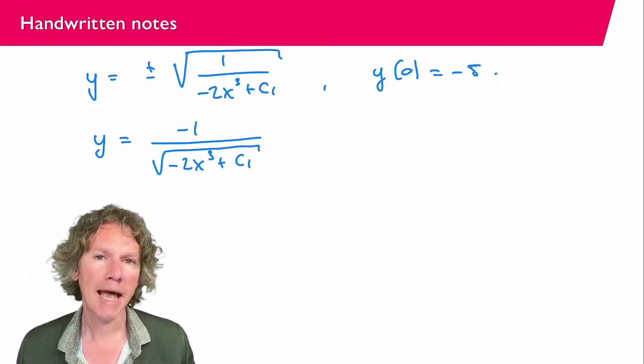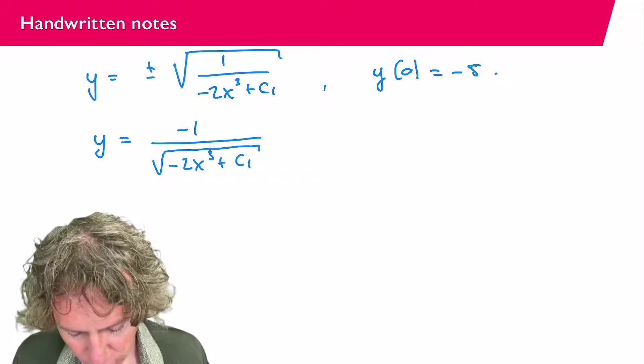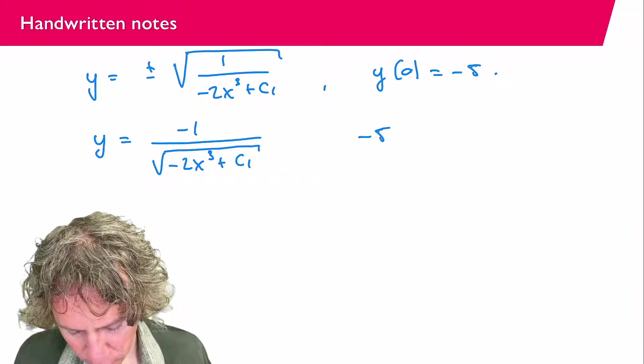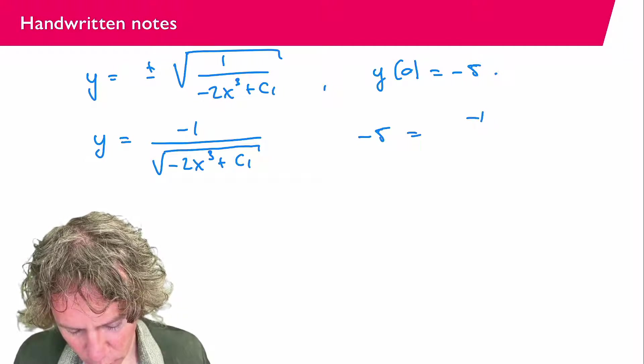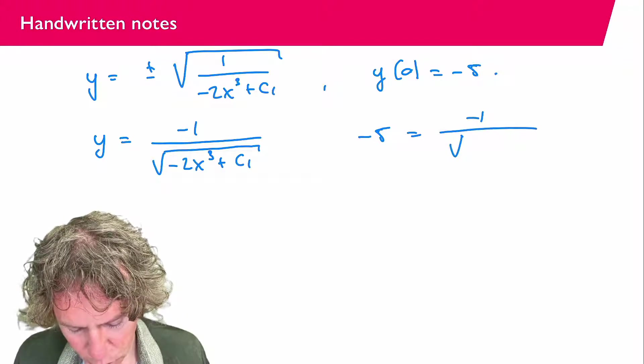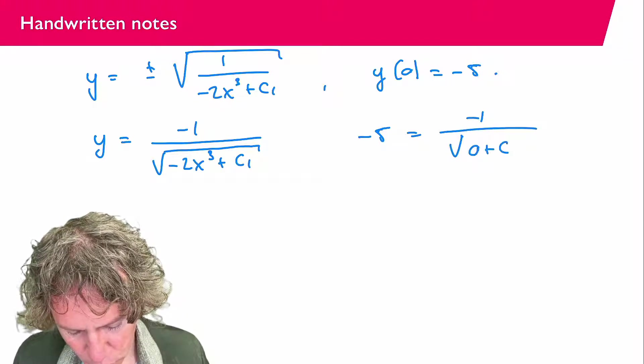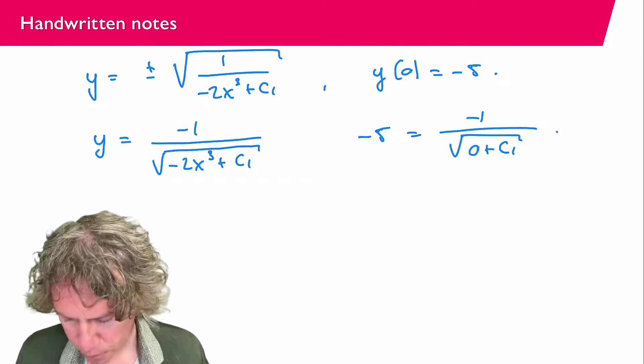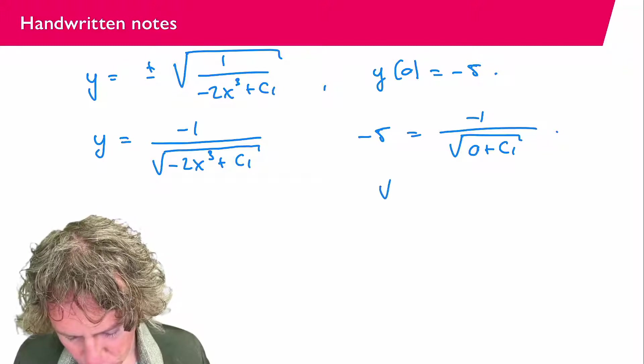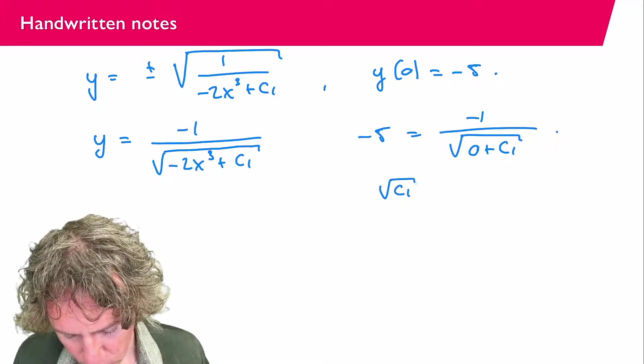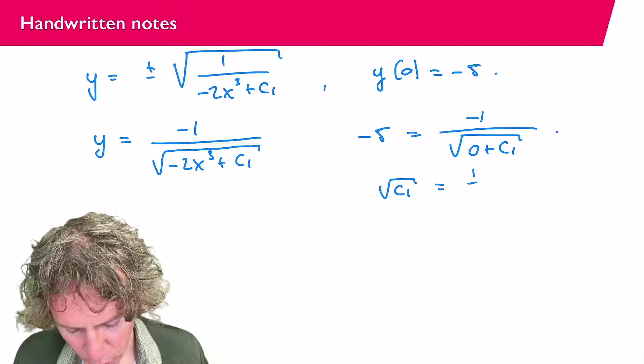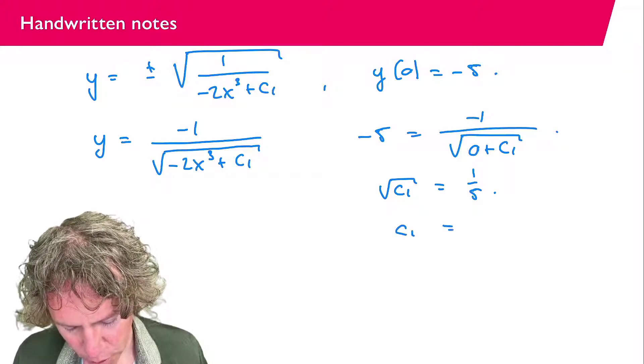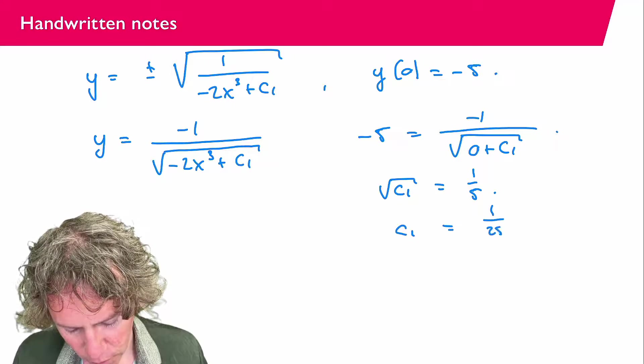And if I now plug in x equals 0 then I should find minus 5 so minus 5 equals minus 1 over square root 0 plus c1 so apparently the square root of c1 should be 1 over 5 so c1 equals 1 over 25.